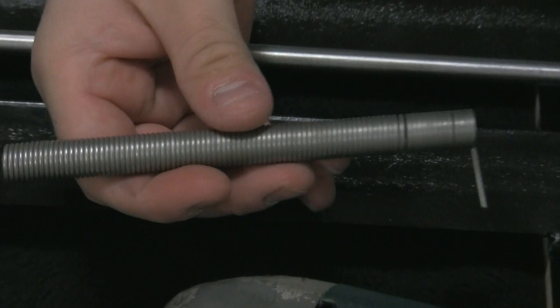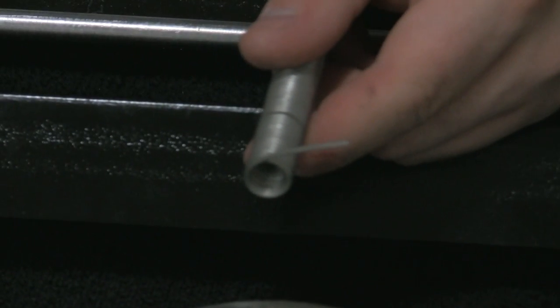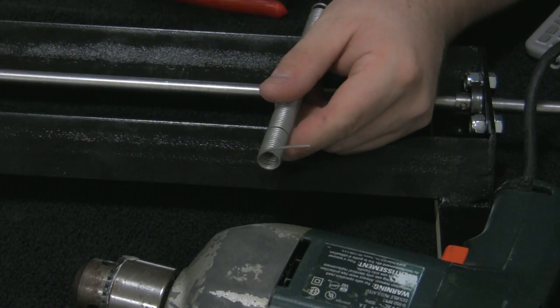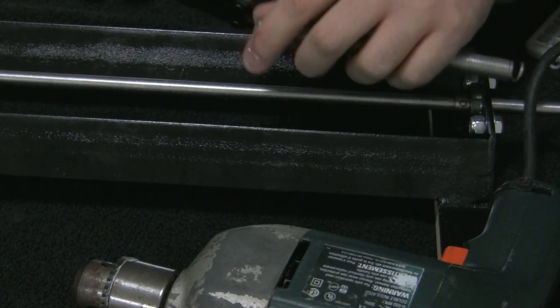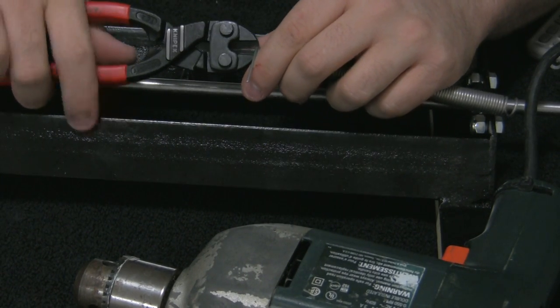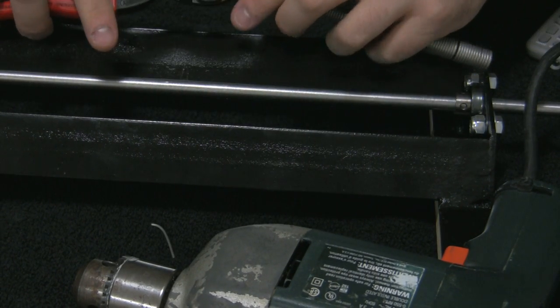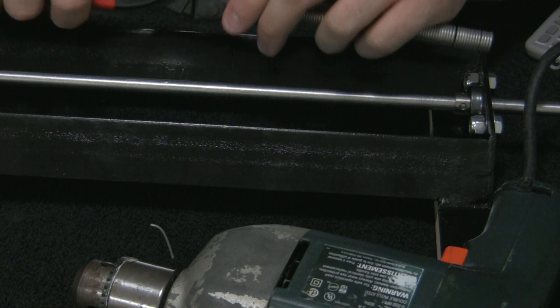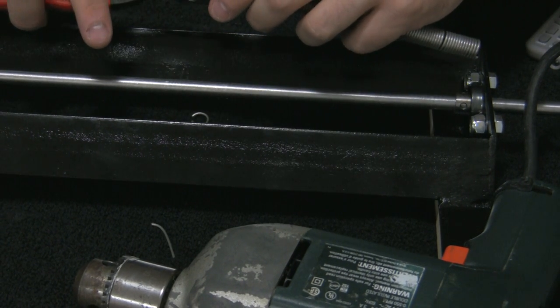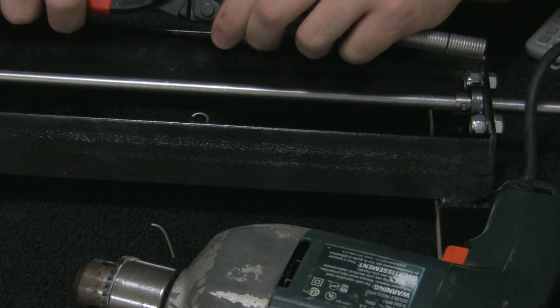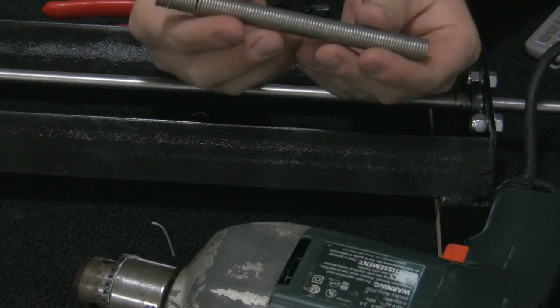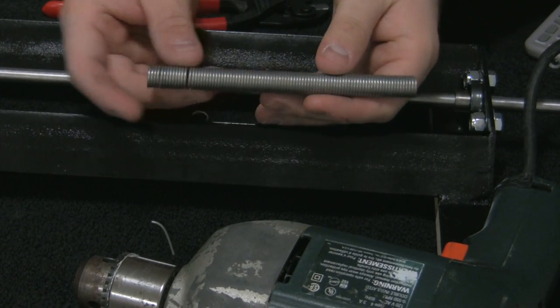So now there we have it. There's our wire. And what I normally do after I do that is, let me actually zoom back out a little bit, is I will take a cutter and just clip off the ends. That way you're not going to end up using these coils anyways because they're stretched out. So there we go. There's our perfect spring ready to go.